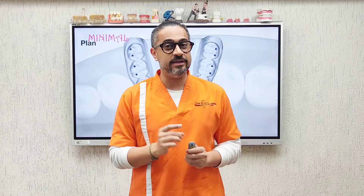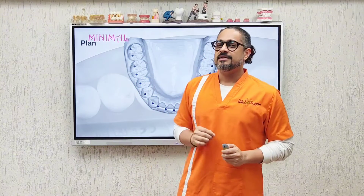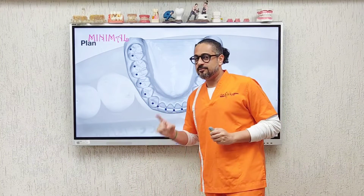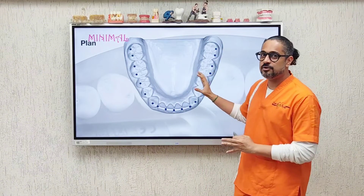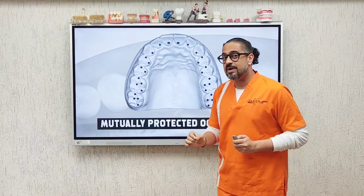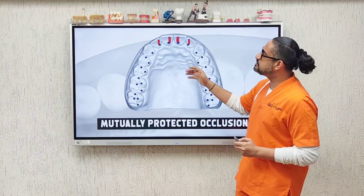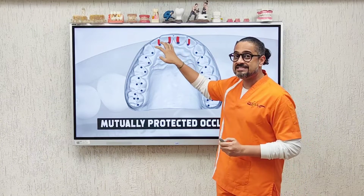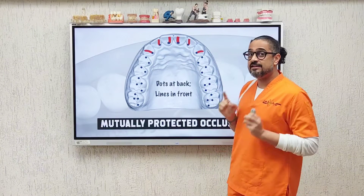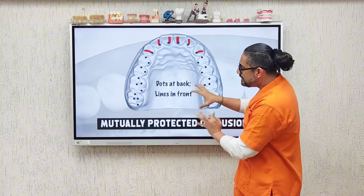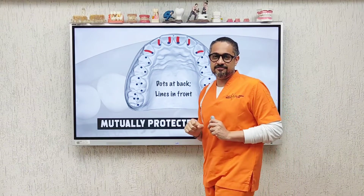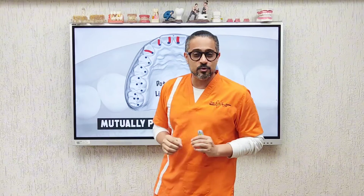At least make sure you achieve this in your day-to-day dentistry — whether it's a simple filling, a crown, a bridge, or a full mouth reconstruction. We are talking tooth-supported restorations. Never forget that when adjusting the bite, it's not just about static occlusion but dynamic as well. When the patient protrudes forward, make sure you have incisal guidance, and in right and left lateral movements, whenever possible, make sure there is canine guidance — because dots at the back and lines in the front gives you mutually protected occlusion, which is the most physiologic occlusion for the natural dentition.